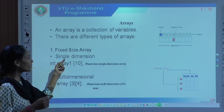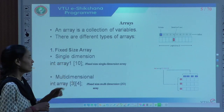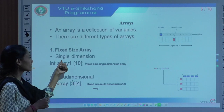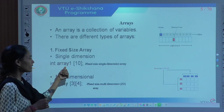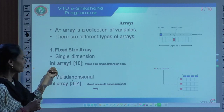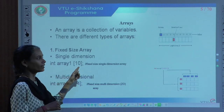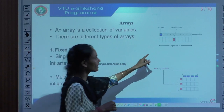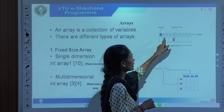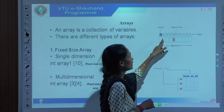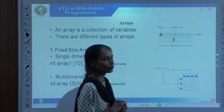A fixed array may be single dimensional or multi-dimensional. For a single dimensional example: array1 is the name, it is of integer type, and there are 10 elements. We can refer to each element as array[0], array[1], array[2], array[3], and so on.